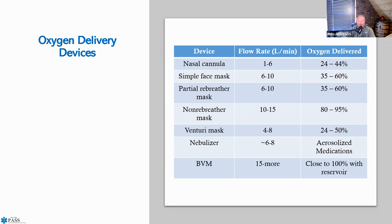The nebulizer runs anywhere from about six to eight liters, but basically just enough to get the medication to aerosolize. We do not want to crank the nebulizer up to 12 or 15 liters, because the medication will aerosolize too quickly and be ineffective—the patient wasn't able to get all of the medication into their system. Put your nebulizer together, increase flow rate until you get aerosolization, and then coach your patient on how to take the medication in appropriately.